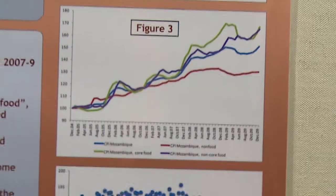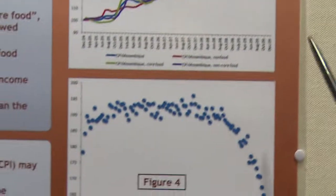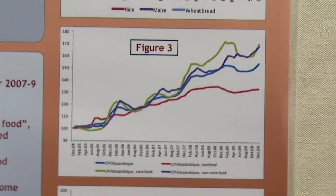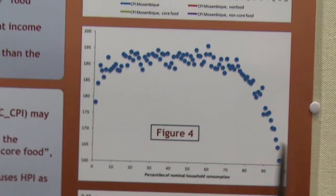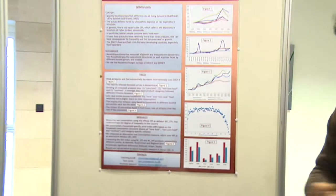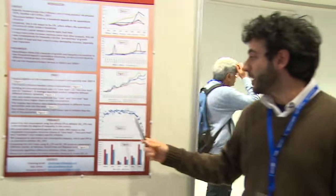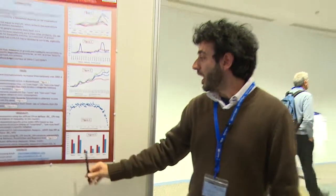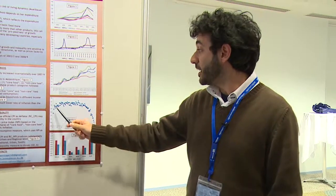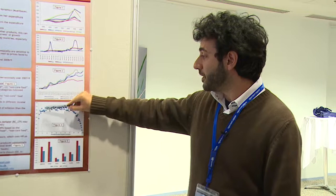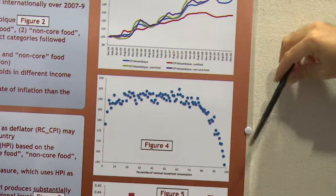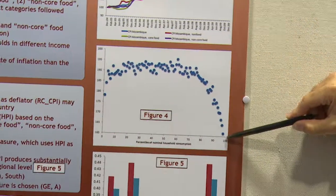We then looked at whether different income percentiles experience different inflation rates, and that's precisely what we found: lower and middle income percentile groups experienced a rate of inflation around 190%, while the richest percentiles in Mozambique experienced much lower inflation rates.